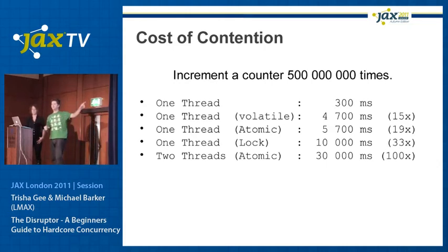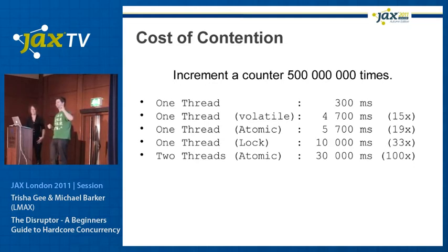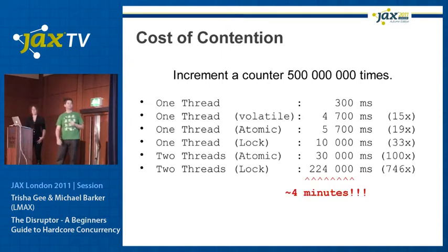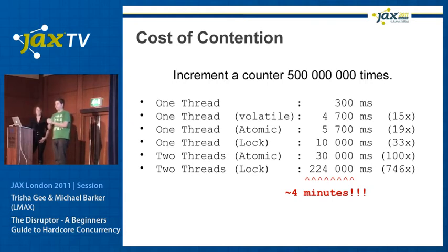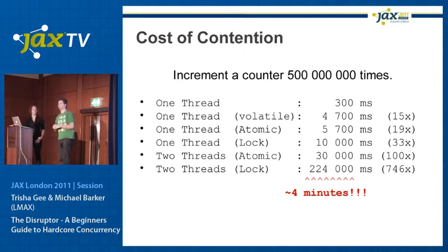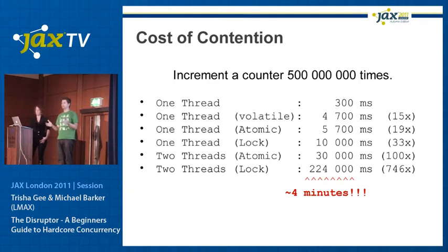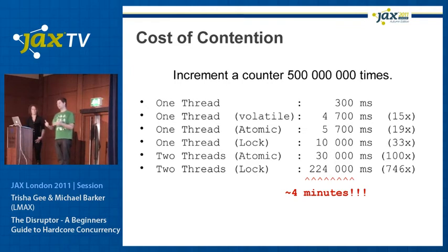Anybody want to hazard a guess about two threads with a lock? It's 746 times slower. And this is one of the very surprising things. If you're trying to write a parallel algorithm and you decide there's mutable shared state and you have to put a lock around it — because there's no other non-blocking way to do it — and that data is highly contended, there probably is no point in parallelising your algorithm. Often it's actually better to not parallelise at all if you've got a contended problem.